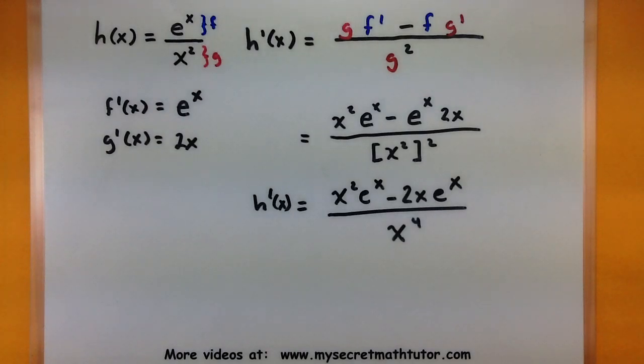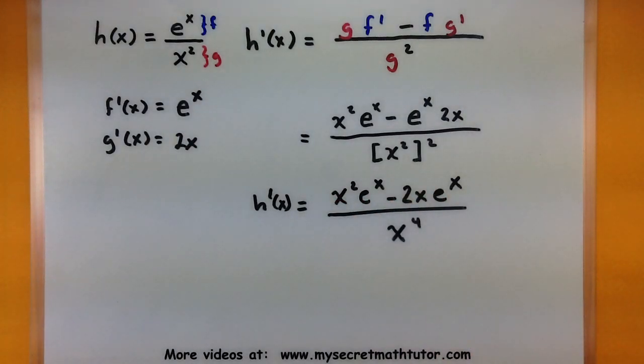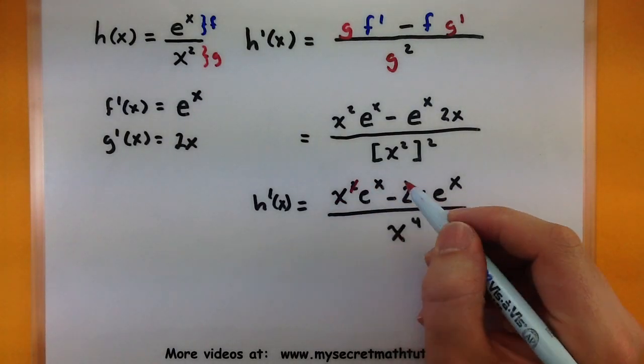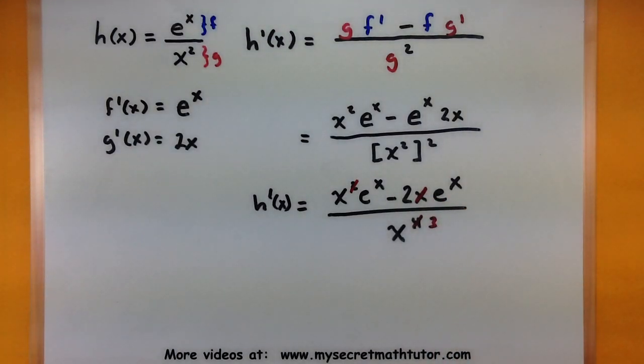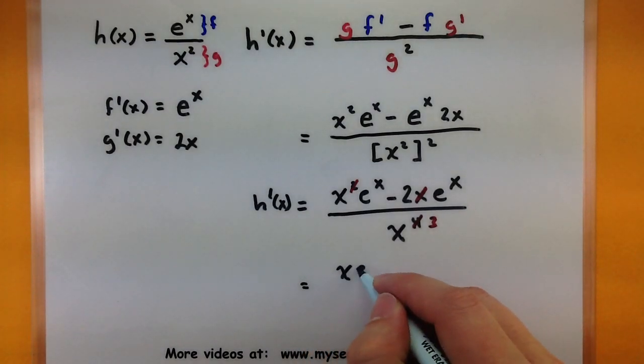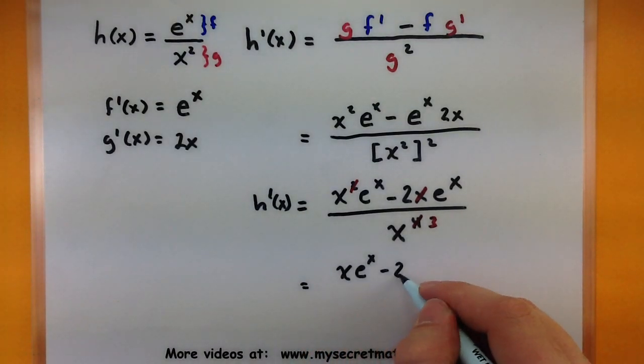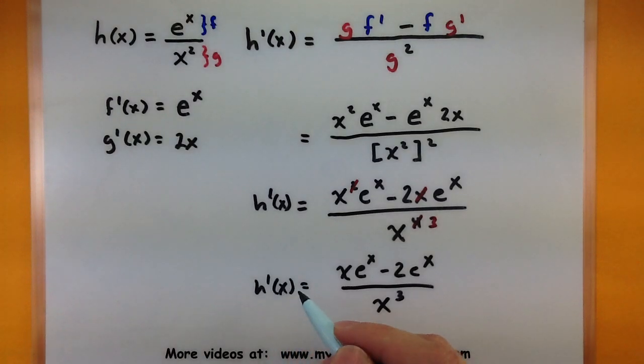Okay, and about the only thing I see that I can simplify here is that I have an x in both pieces in the top, I have x to the 4th in the bottom, and I can actually cancel out an extra x. Let's see, what would this leave me with? x e to the x minus 2 e to the x all over x cubed. So this would be our derivative.